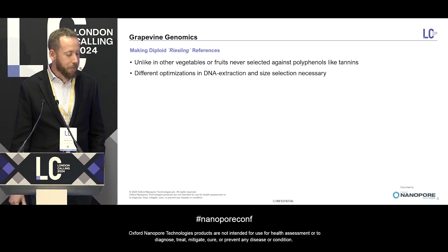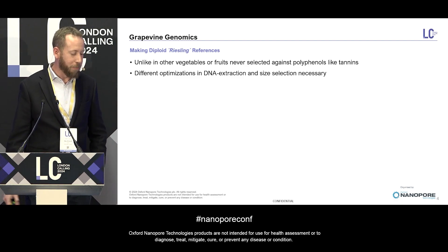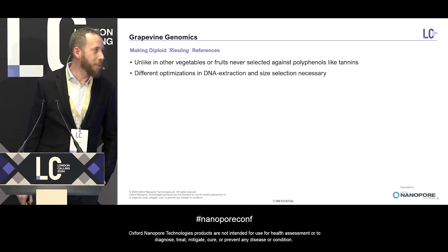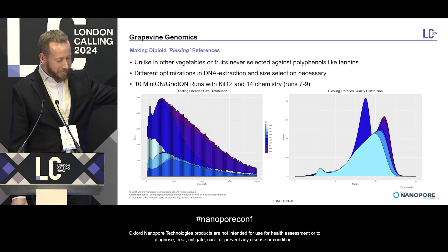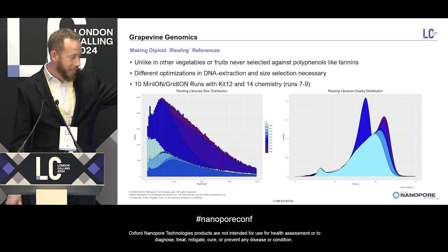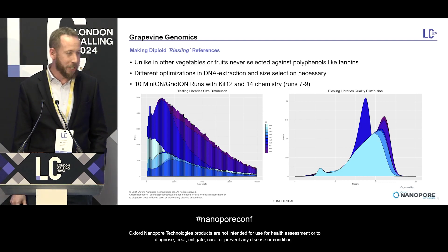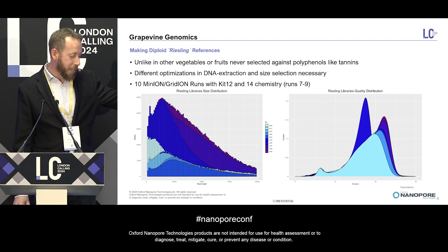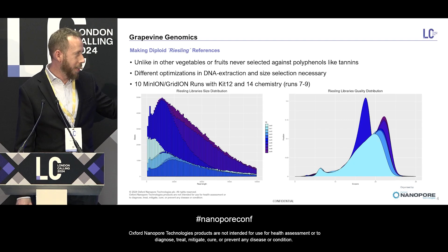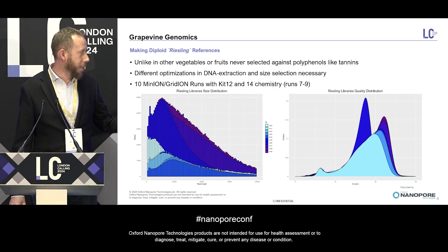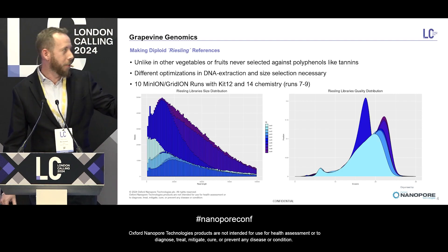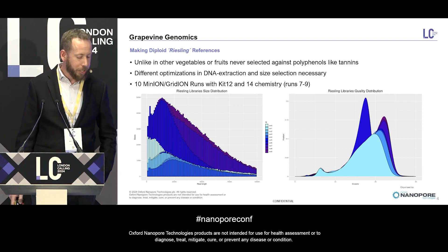So we had to do some optimizations to our DNA extractions. As Captain Jack Sparrow said, complications arose, endured, were overcome. Eventually we got there. You can see continuous progress — we started with kit 12, the lighter ones are earlier and the darker ones are later. We got better on yield, and especially on error rate. You can see the Q-score has continuously been shifting to the right.